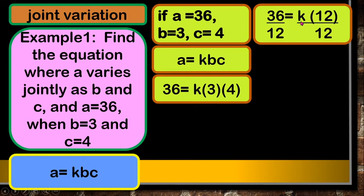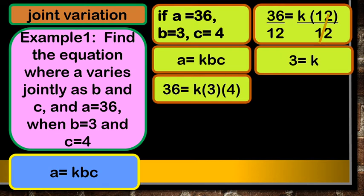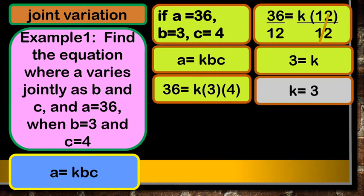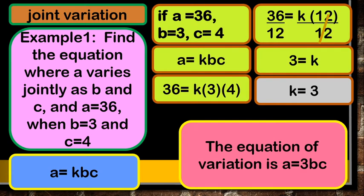To solve for k, divide both sides by 12. So 36 divided by 12 gives k equals 3. Our constant of variation is 3. We can now write the equation of variation: A equals 3 times B times C. All you have to do is substitute the value of k into the original equation form.